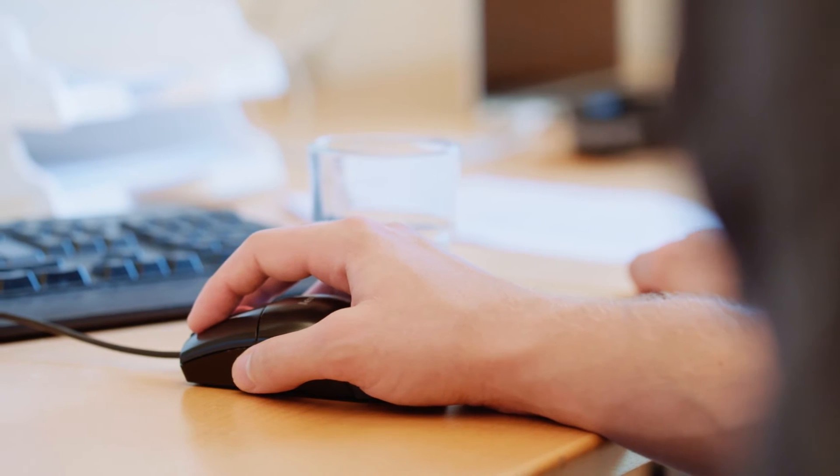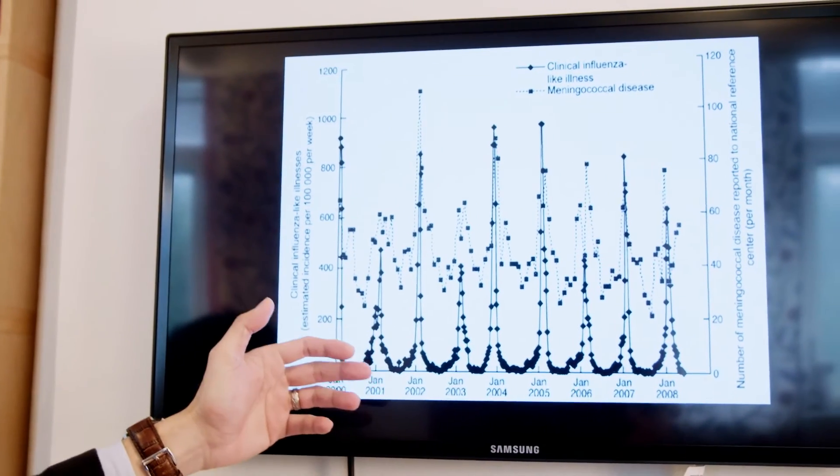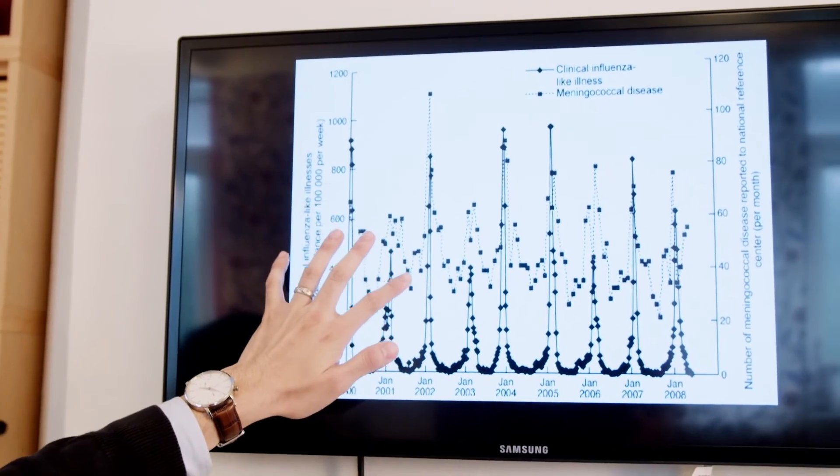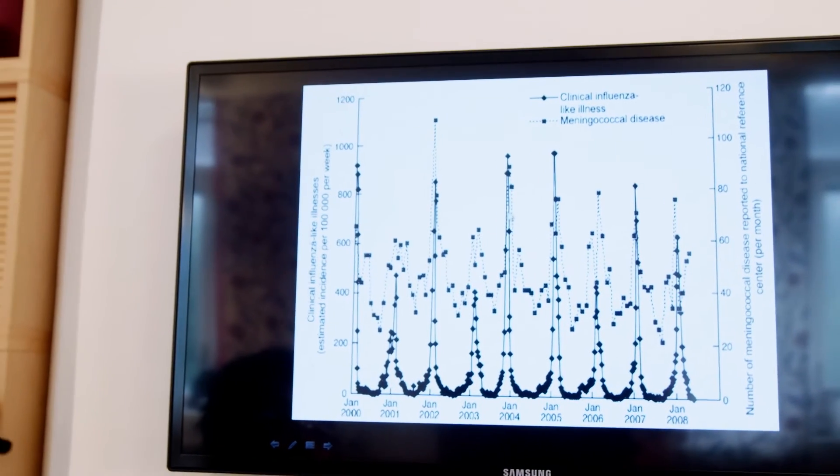One factor that they've looked at is temperature. The dotted lines here, the black one, could be influenza or it could be cold-related illnesses. But if you see the meningitis cases, it peaks together with the influenza.